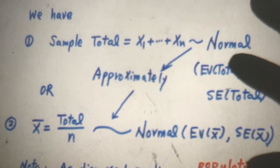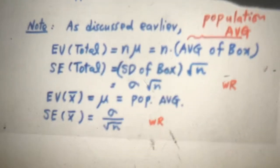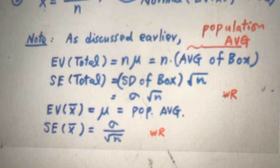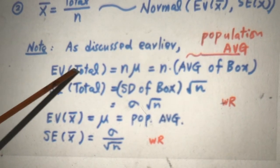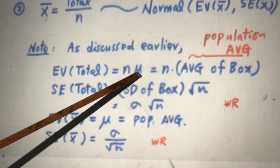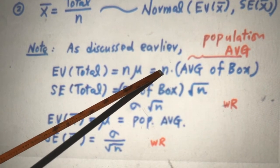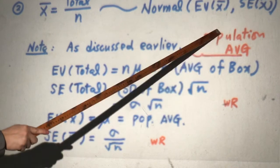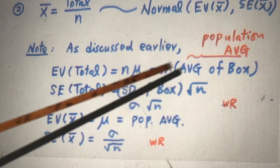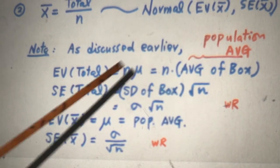And let's note. Let's look at the note. As discussed earlier, EV sample total is N times mean, or you say average of the box times N. Average of the box is population average. Usually we use mean, use this term.